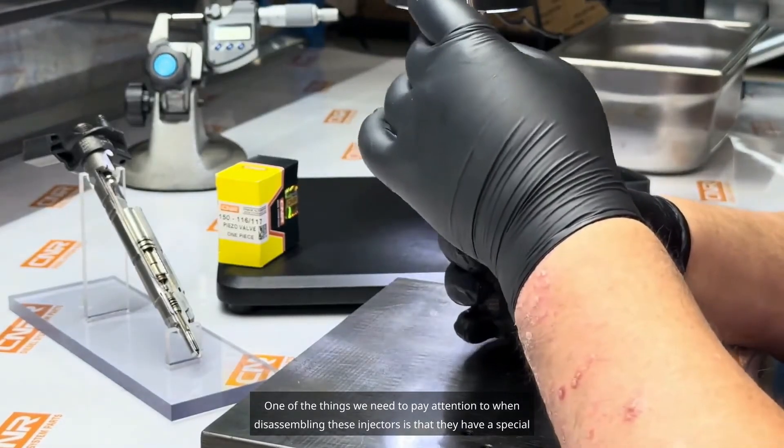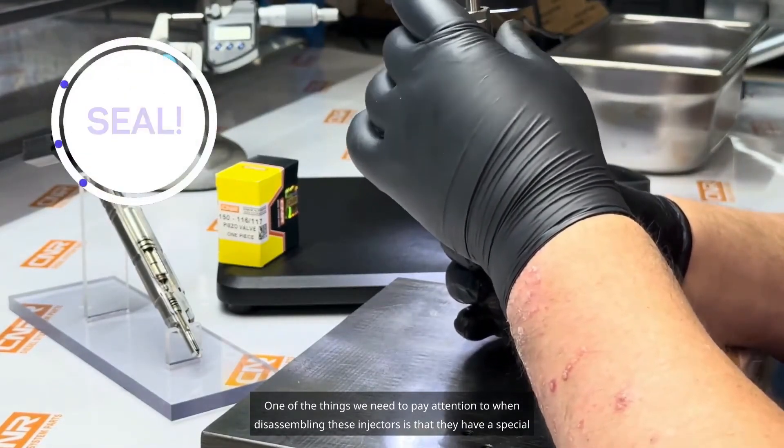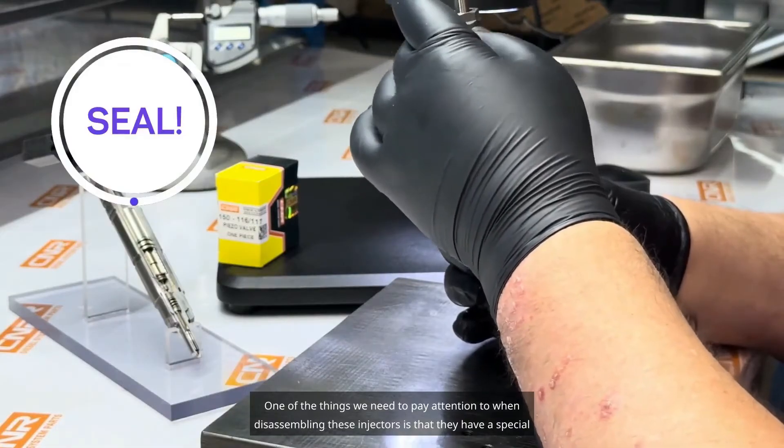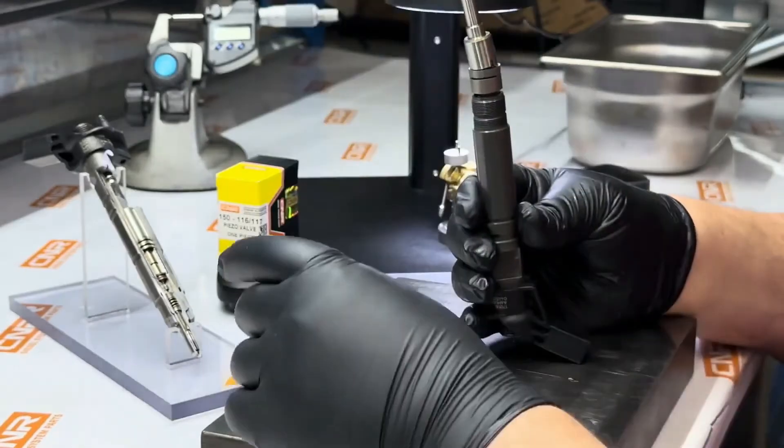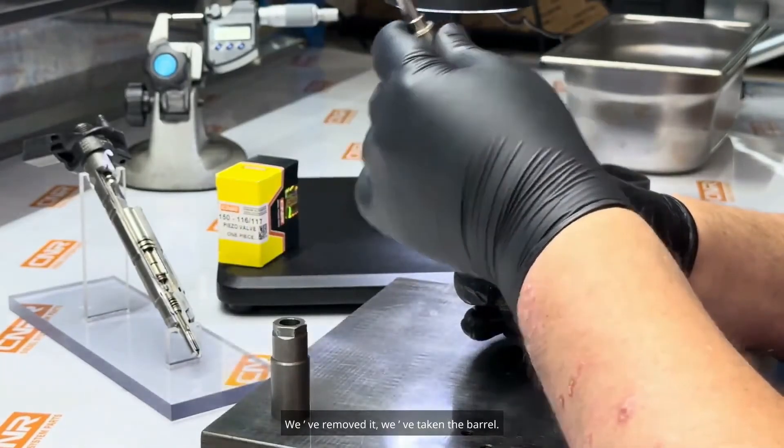One of the things we need to pay attention to when disassembling these injectors is that they have a special closing system, the nut on the threaded nut. We've removed it, we've taken the barrel.